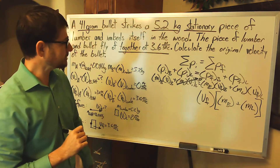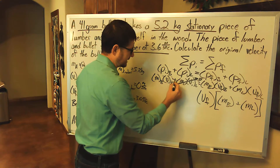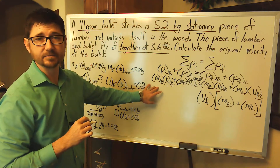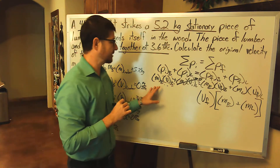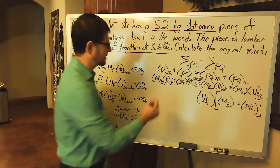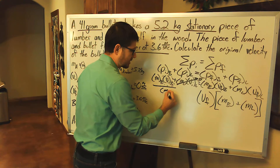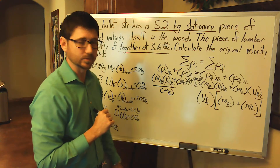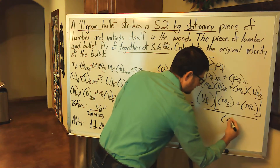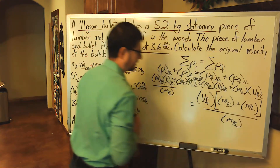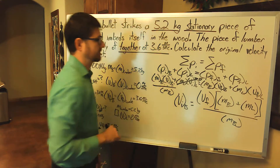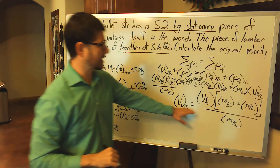Our unknown is the initial velocity of the bullet, and we know the mass of the bullet. So all we have to do to isolate our unknown is divide by the mass of the bullet on both sides of the equal sign. That gives us: the initial velocity of the bullet equals the final velocity times (mass of the bullet plus mass of the lumber), divided by the mass of the bullet.